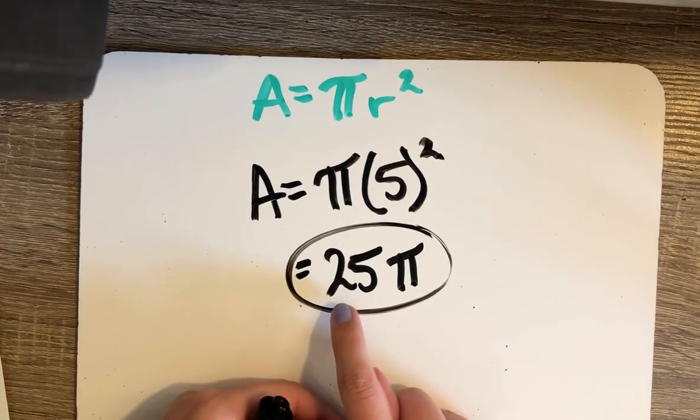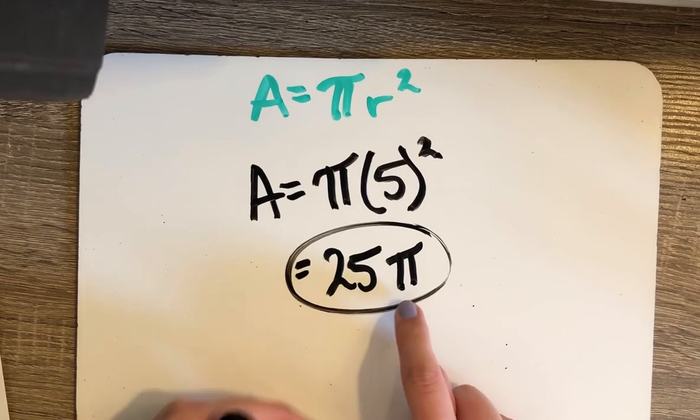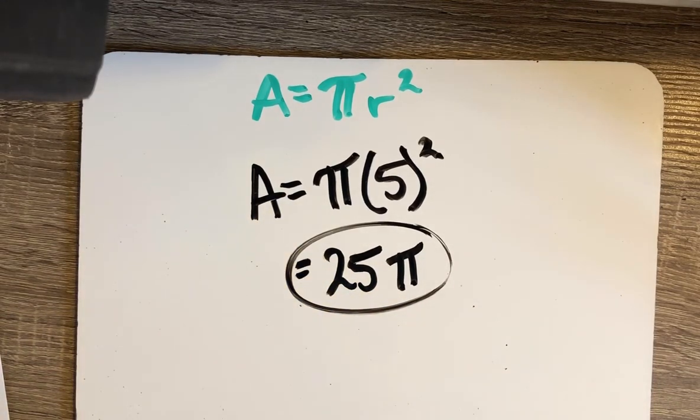If a question ever asked you to find the area to the nearest tenth or the nearest hundredth, that's when you would go through and multiply 25 times π on the calculator and round however it told you to.